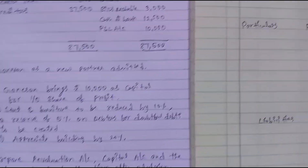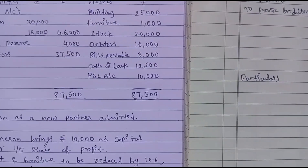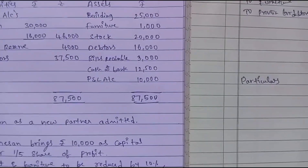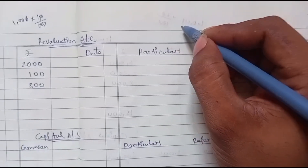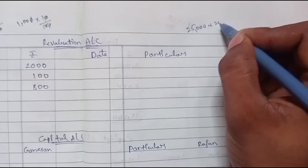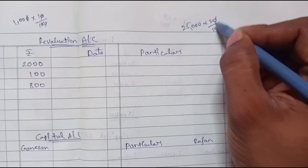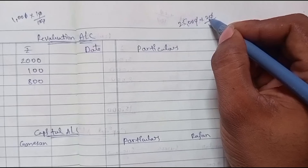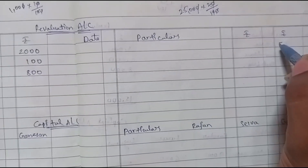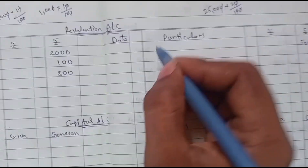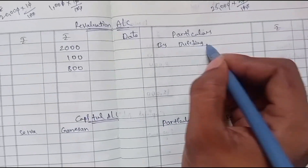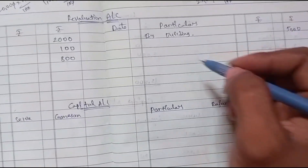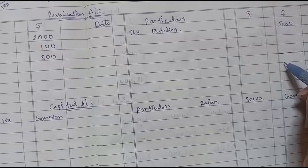Last item: appreciate building by 20%. The balance sheet value of building is 25,000. Appreciation means credit side of revaluation account. 25,000 into 20 by 100 equals 5,000. So: By Building 5,000.